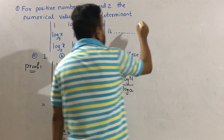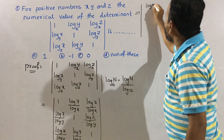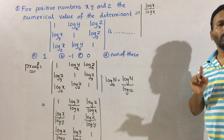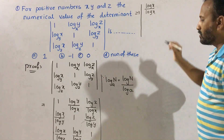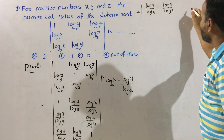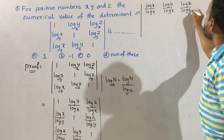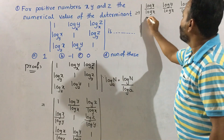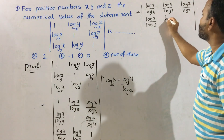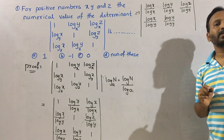Next step: we rewrite each 1 as a log divided by itself — so 1 equals log x divided by log x for row 1, and 1 equals log y divided by log y for row 2, which cancel to give 1. Now we can take common factors from each row.